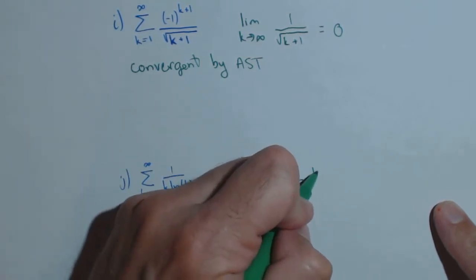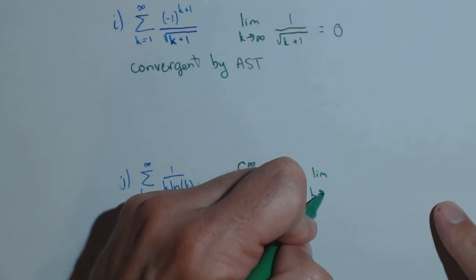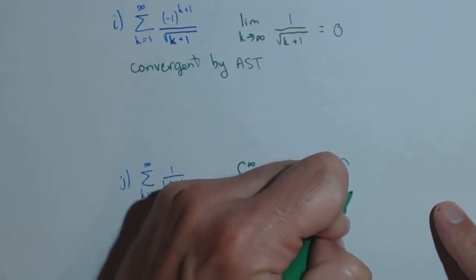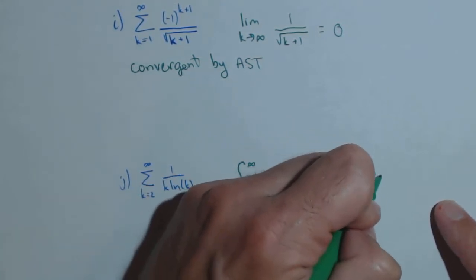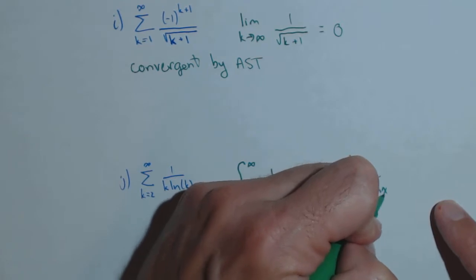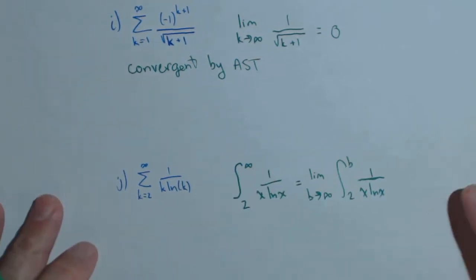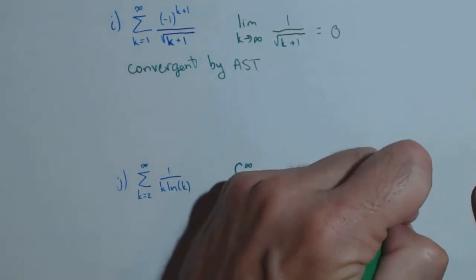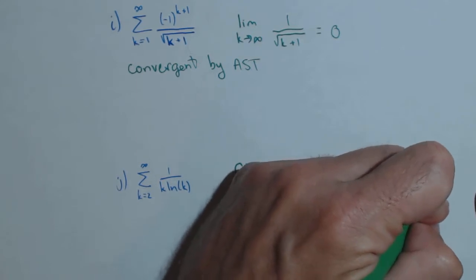Remember with an improper integral, first thing we do is we change it to a limit, so b goes to infinity, 2 to b of 1 over x ln of x. This is a very nice u substitution problem. So, I'm going to let u be ln of x.